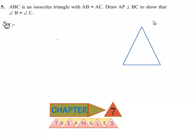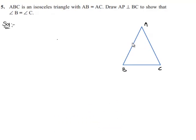Moving on to the solution, let us consider ABC, an isosceles triangle with AB equal to AC, and let us draw a perpendicular AP to BC. Here we need to prove that angle B is equal to angle C.